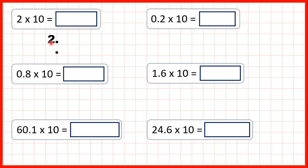So if we copy down this 2, one square to the left, we now have an empty square before the decimal point. We know that the digit before the decimal point has to be the 1's digit, so we need to write a 0 in this empty square to show that the 2 is now 2 tens. So now we have the decimal point on the end of 20, so our answer is 20.